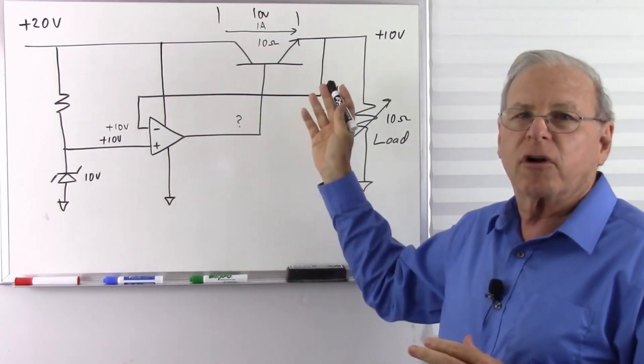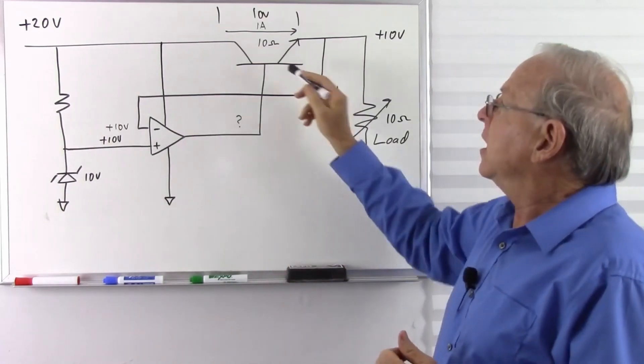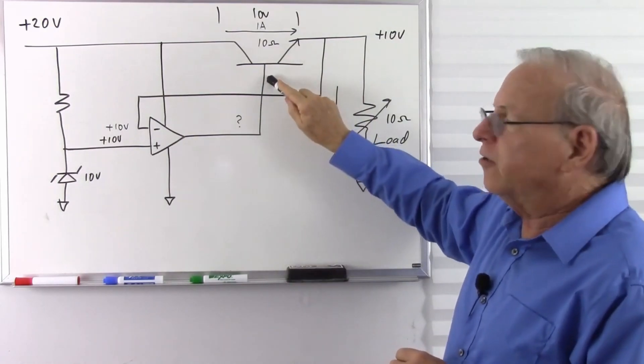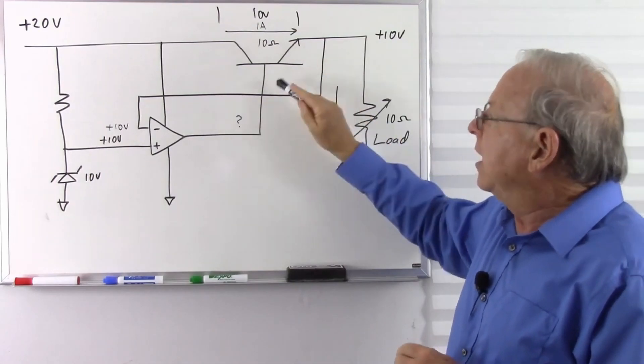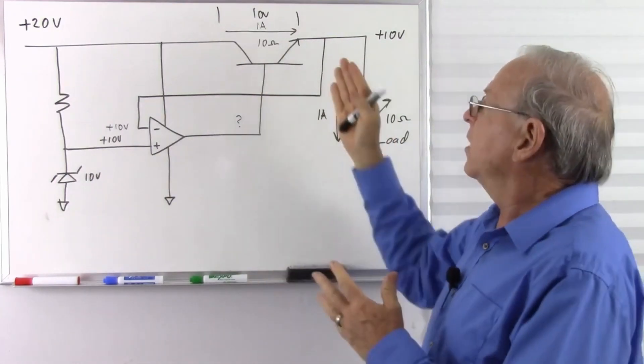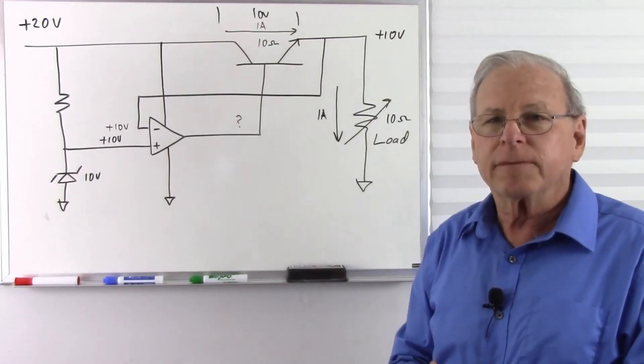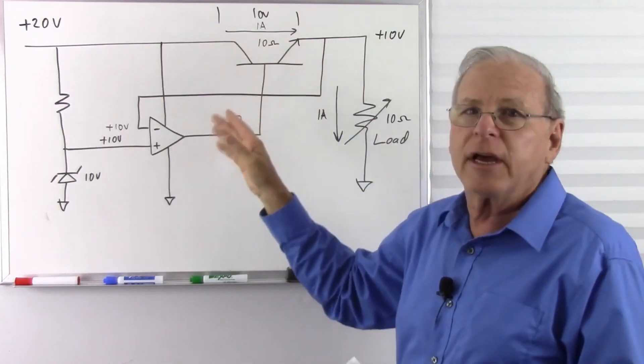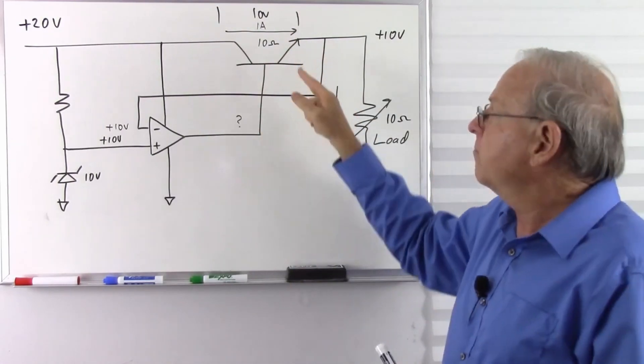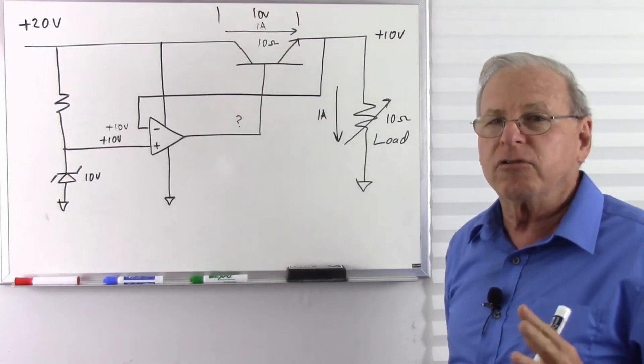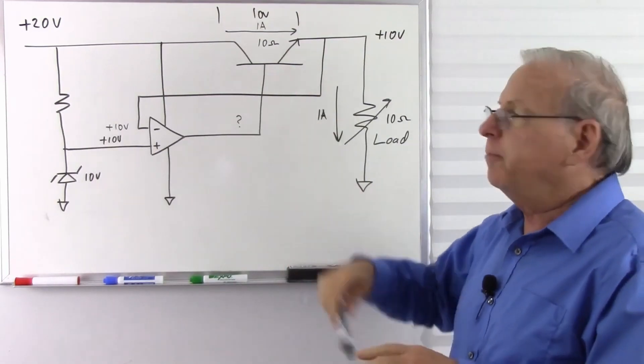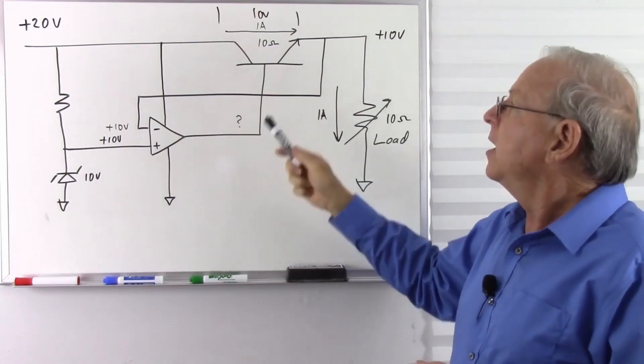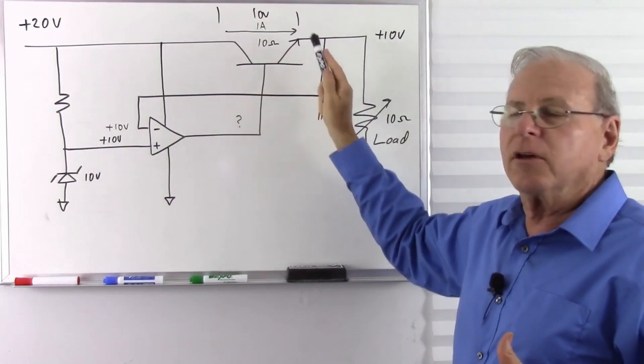If someone told you that transistors are simply a switch, they misled you. Yes, I can use this as a switch. If I put it all the way into saturation, which means I have raised this voltage to the point where raising it anymore will not increase the current, it's fully on. It looks like a closed switch. If I reduce this voltage to the point where reducing it no longer reduces the current, I've put it in a condition called cutoff. Basically, it's an open switch. Transistors are used as switches all the time by putting them all the way into saturation or all the way into cutoff and never working them in between.